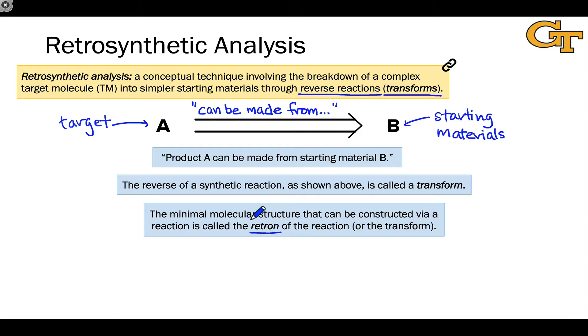But this idea of the retron within the target is very important in practice. Because to figure out whether a transform is relevant to a particular target, we're looking for particular substructures within the target that can be constructed via reactions in the forward direction. And those substructures, just the atoms and bonds that are actually made by that reaction, is called the retron of the reaction.